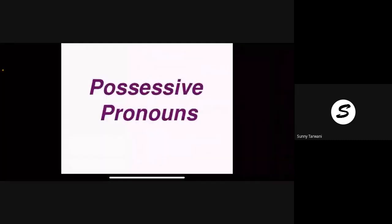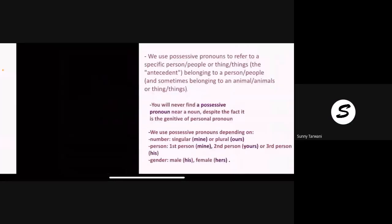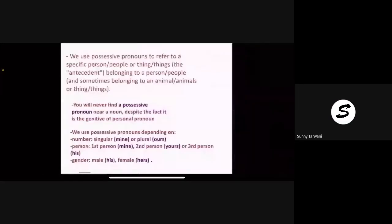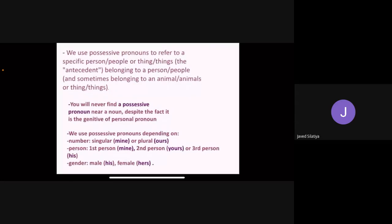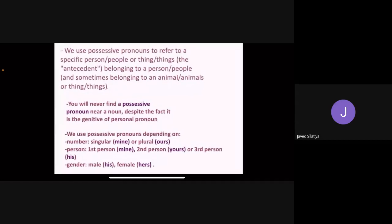Now we will see what possessive pronouns are. Maryam, you will read possessive pronouns. We use possessive pronouns to refer to a specific person, people, and sometimes belonging to an animal or thing.